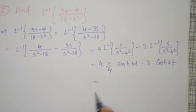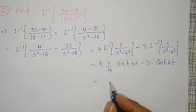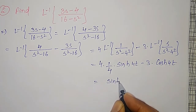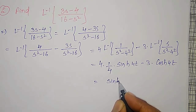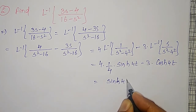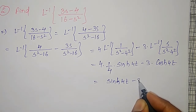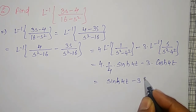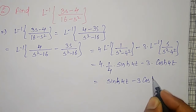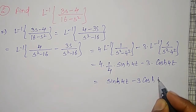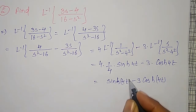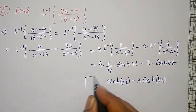Therefore, the final answer is sinh(4t) minus 3·cosh(4t), which is the required answer.